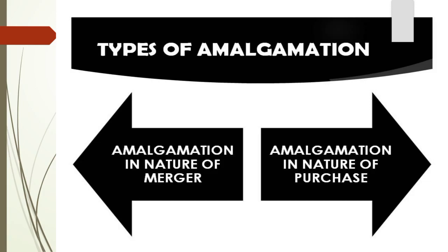There are two types of amalgamation. The first is amalgamation in the nature of merger, and the second is amalgamation in the nature of purchase — that is, you either merge a company or you purchase a company.